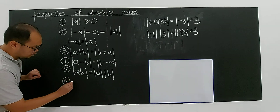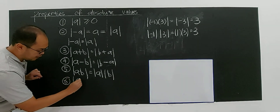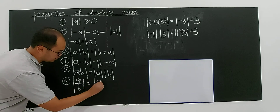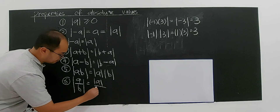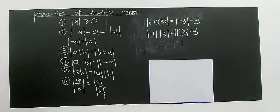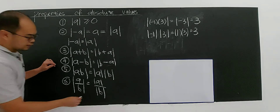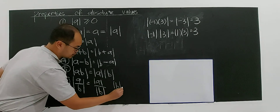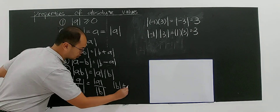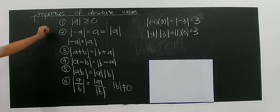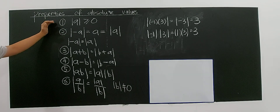The sixth property: modulus of a divided by b equals modulus of a divided by modulus of b, provided that modulus of b is non-zero. That covers all the properties of absolute values you need to know.